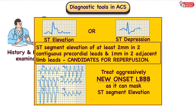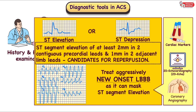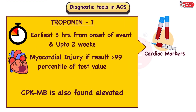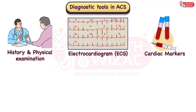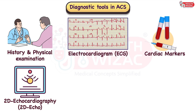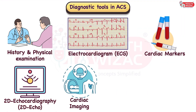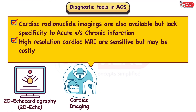The final call should be taken by the treating cardiologist, who may confirm the diagnosis along with cardiac markers, 2D echo, and even coronary angiography. Troponin I level is an important diagnostic tool, which may be detected as early as 3 hours from onset and up to 2 weeks post myocardial injury. ACS is confirmed if the troponin I level is more than 99th percentile of the test value. CPK-MB is also found elevated. 2D echocardiography may show regional wall motion abnormalities along with hypokinetic or akinetic regional wall movements with compromised or preserved ejection fraction. Cardiac radionuclide imaging lacks specificity for acute versus chronic infarction, and higher-resolution cardiac MRIs are available but may prove costly, so they are used in special conditions.